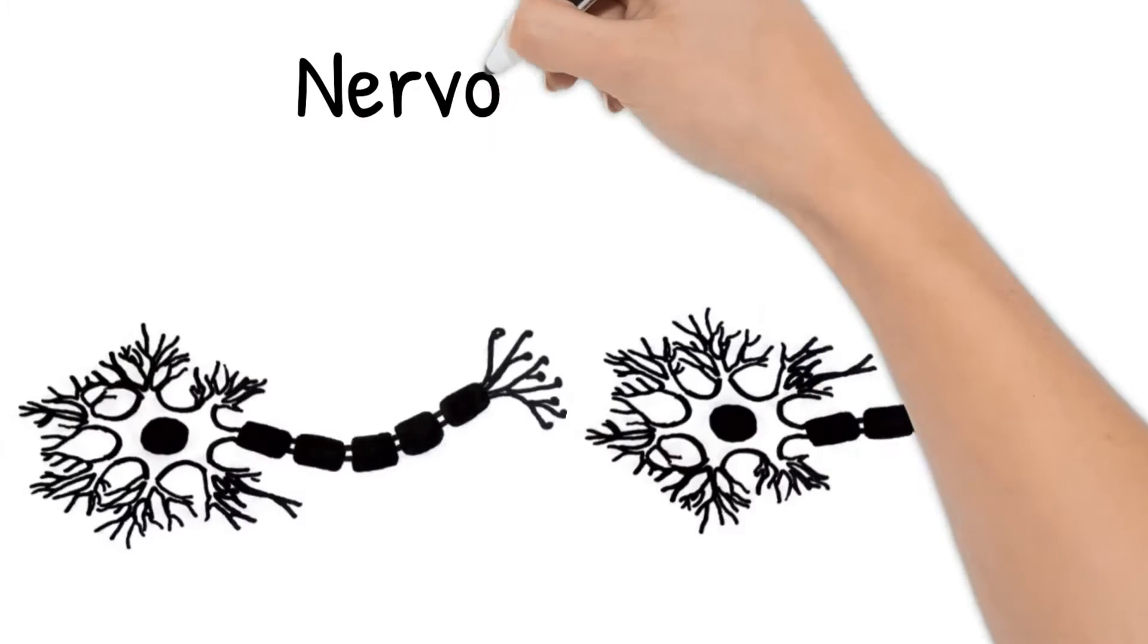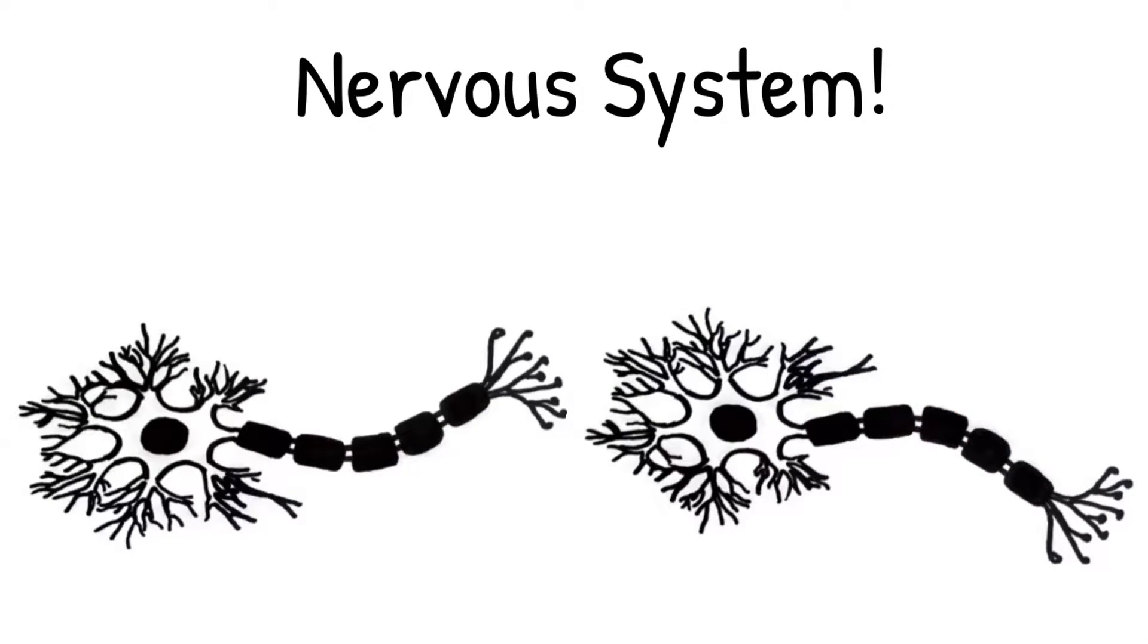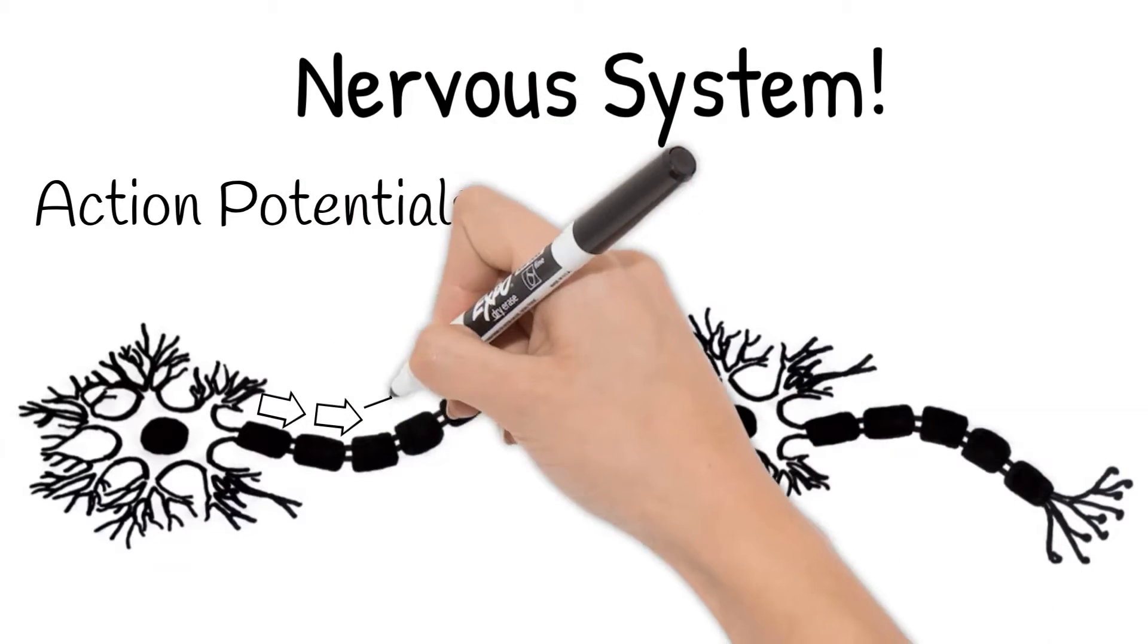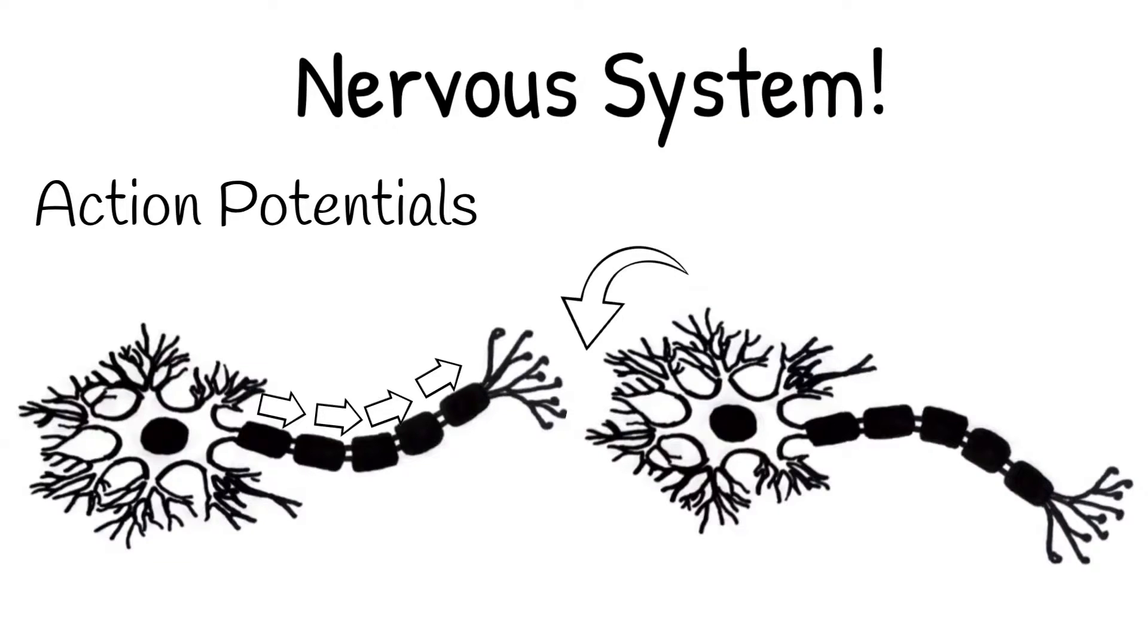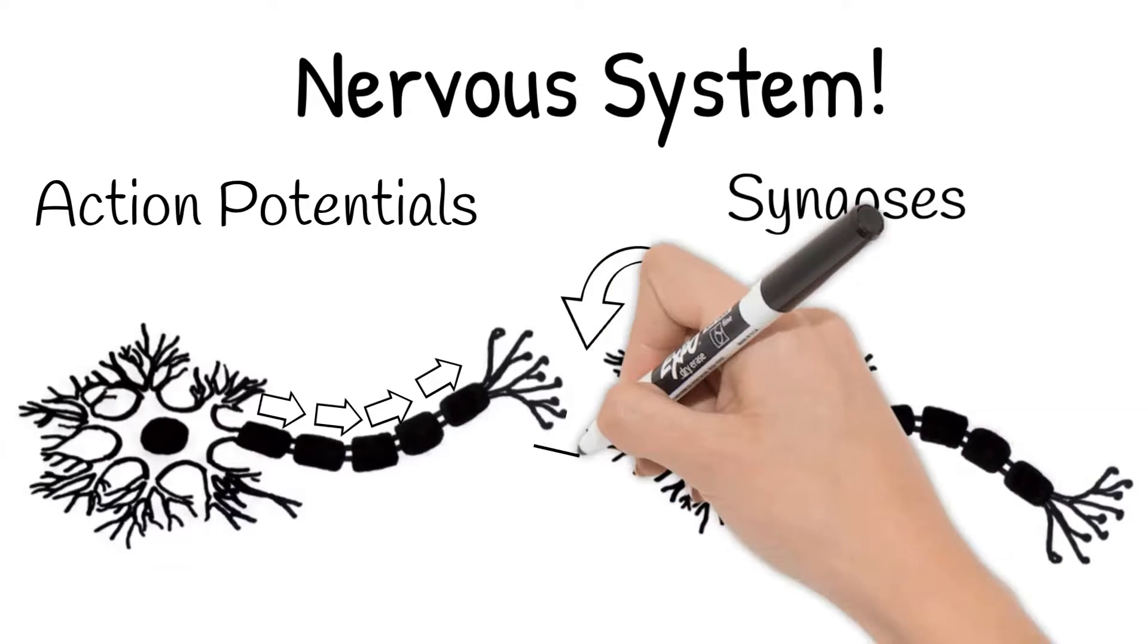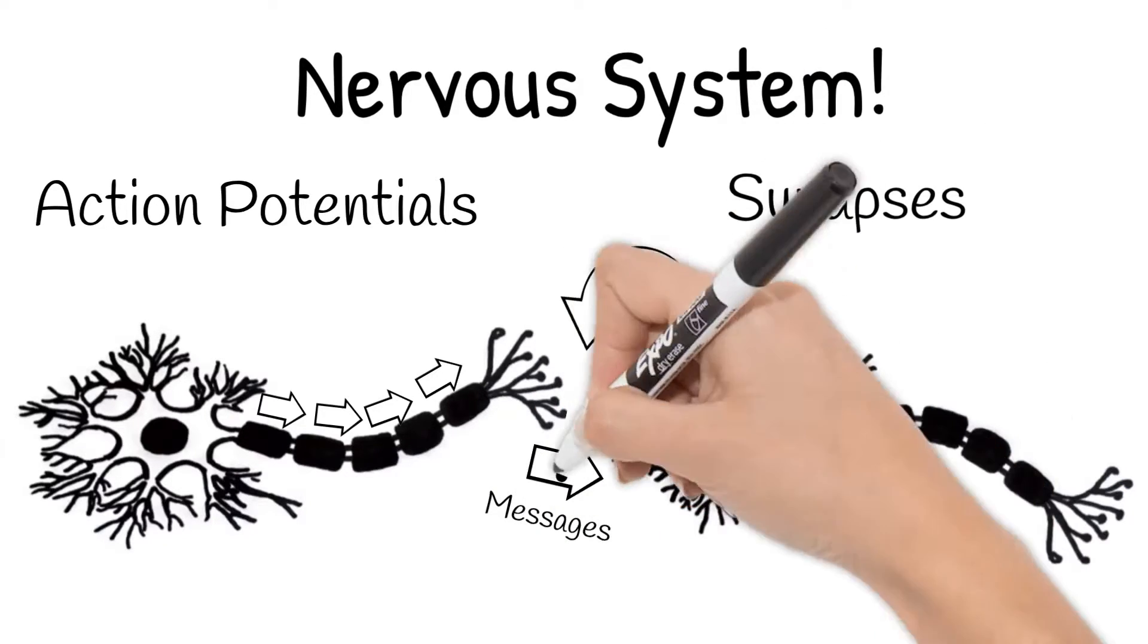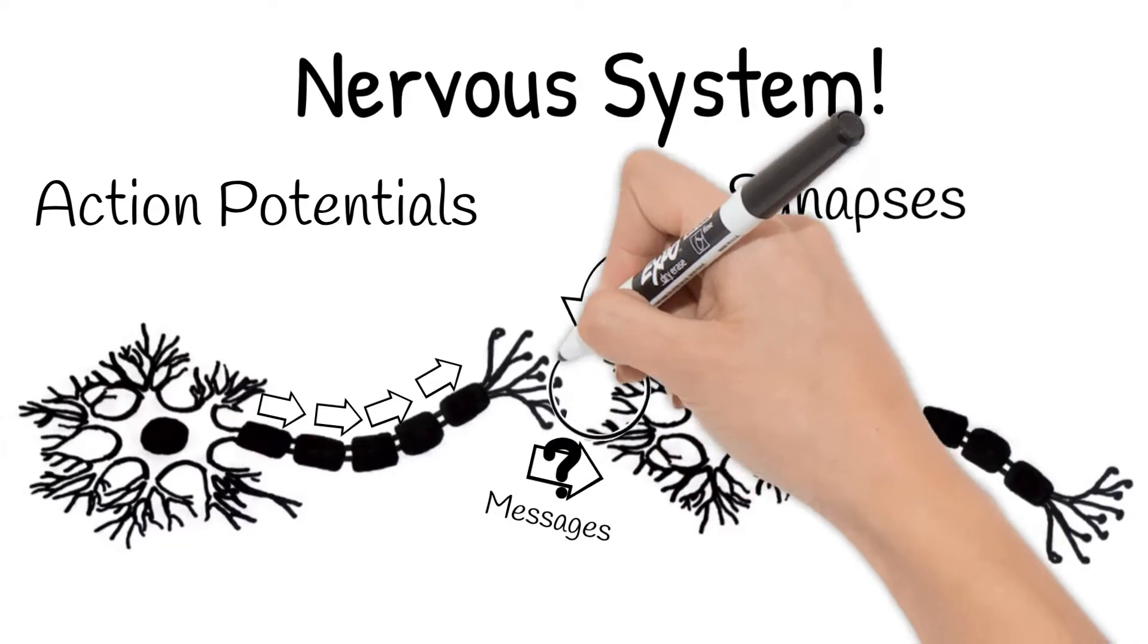In previous videos on the nervous system, you learned all about action potentials and how they travel through an axon. You also learned there are small gaps between the axon of one neuron and the dendrite of the next, called synapses. So how do messages get passed between neurons? Let's take a closer look.